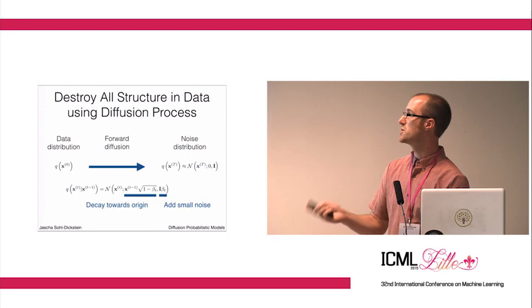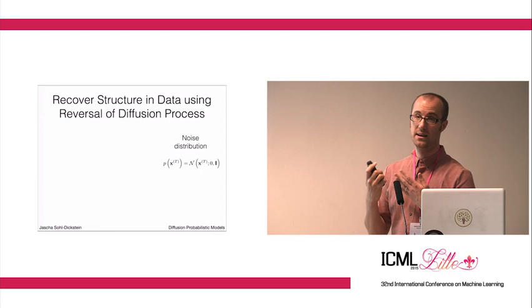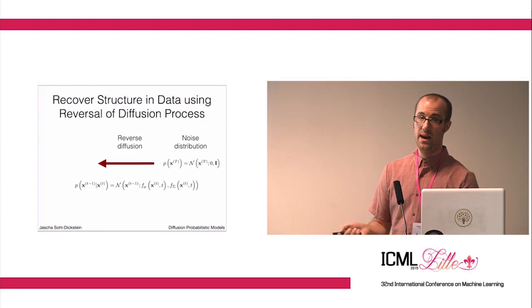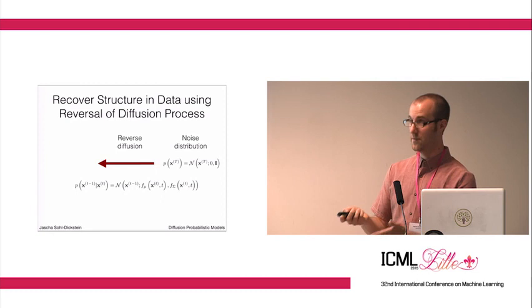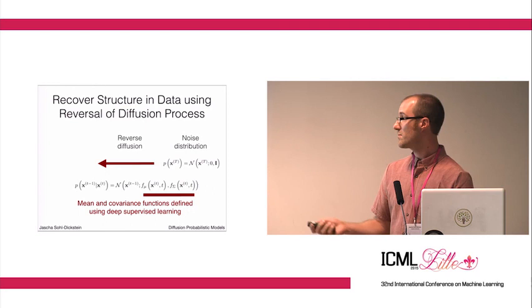What we're going to do is build our generative model by learning the reversal of this. We're going to have a model which starts at the Gaussian noise distribution and where we run a diffusion process for the reverse time diffusion where the mean and covariance functions are our learned functions, which we're going to use a deep network to learn.